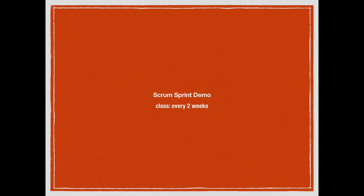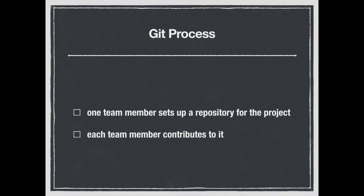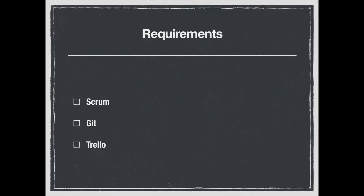Every one and a half to two weeks you'll do a demo in class so other people can see what you're working on. You'll also put the code in GitHub. One team member will set up a repository for the project, and each team member will contribute to it. There's a problem compared to previous years: in Cloud9, when you make a commit while sharing a workspace, it may look like one person is making the commit. Before Cloud9, I could do a git blame and see who submitted what. The requirements are to use the Scrum process, use Git, and keep track of the product backlog and sprint backlog using a tool called Trello.